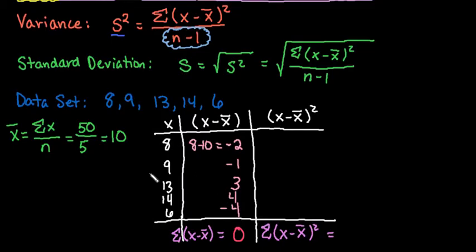The more variation that you have, the more these values are away from the mean, the larger your variance and standard deviation will be. With this, we can't do a whole lot with 0, which is why we have this next column.